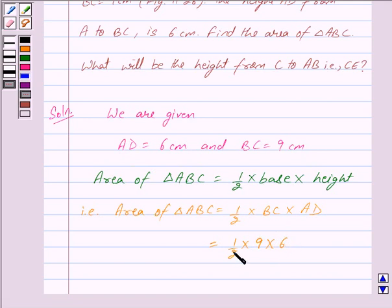Cancelling 2 in denominator and numerator we get 3, so this equals 9 × 3 = 27. Area of triangle ABC is 27 cm².